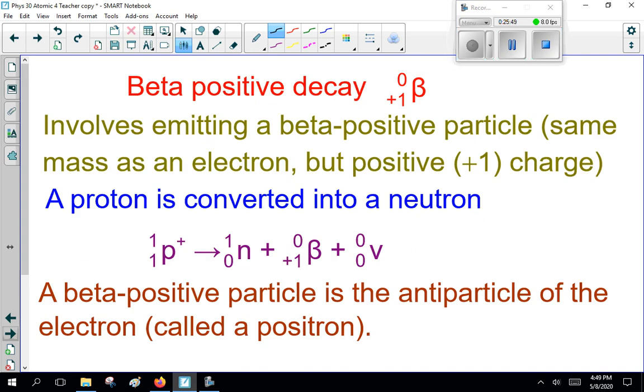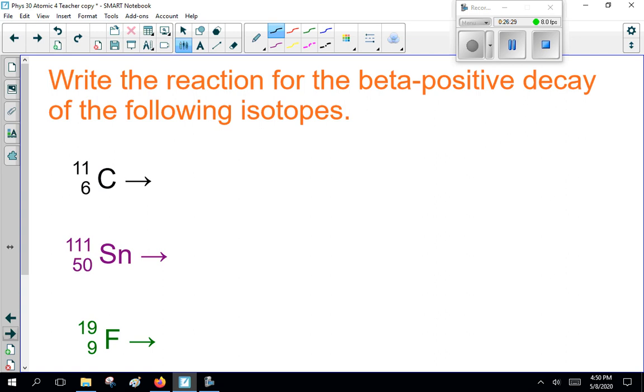That means there's a beta-positive decay. Now, this involves emitting a beta-positive particle, same mass as an electron, but positive charge. Sometimes written electron-positive just to screw with you. So, here, a proton is converted into a neutron. So, the proton becomes a neutron, but it had a positive charge, so it's got to spit out that positive charge and a neutrino. So, a beta-positive particle is the antiparticle of the electron, called the positron. Now, antiparticles are nice. I'll talk about them in a few minutes, but first, let's do a few reactions.